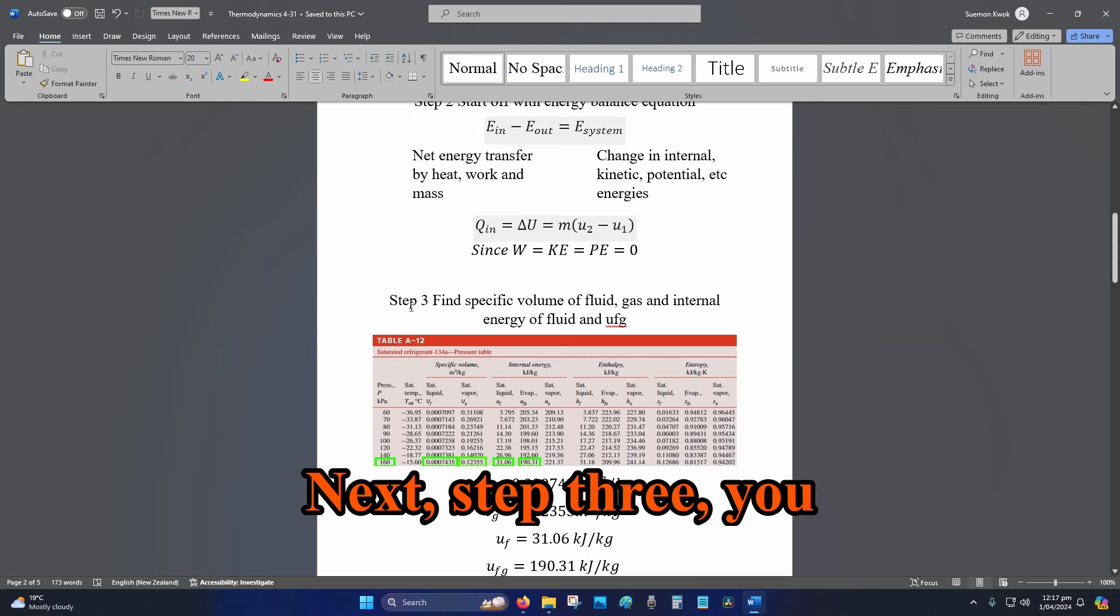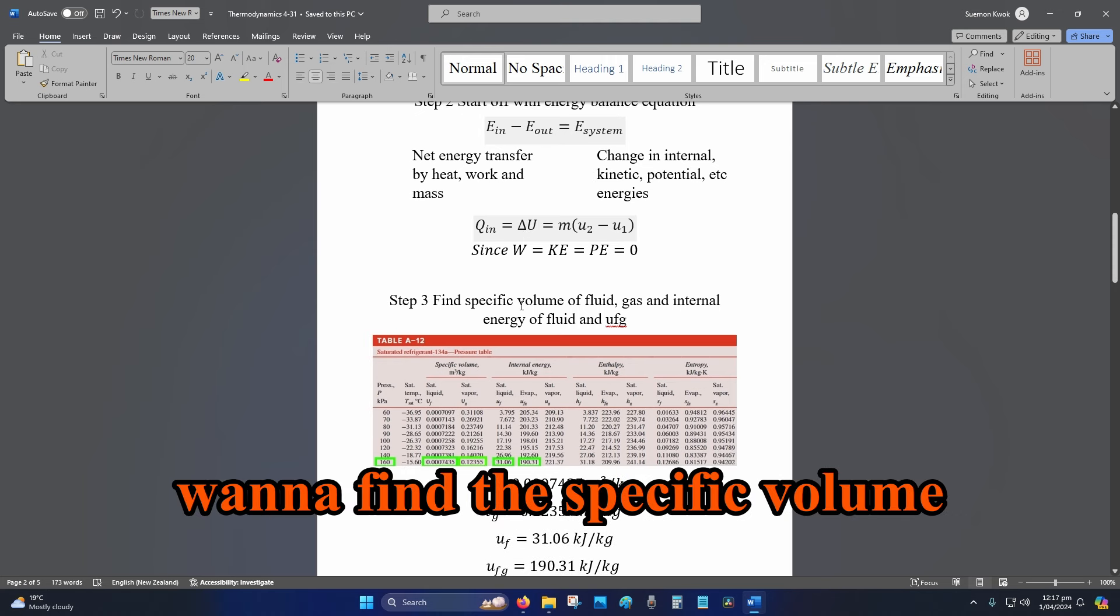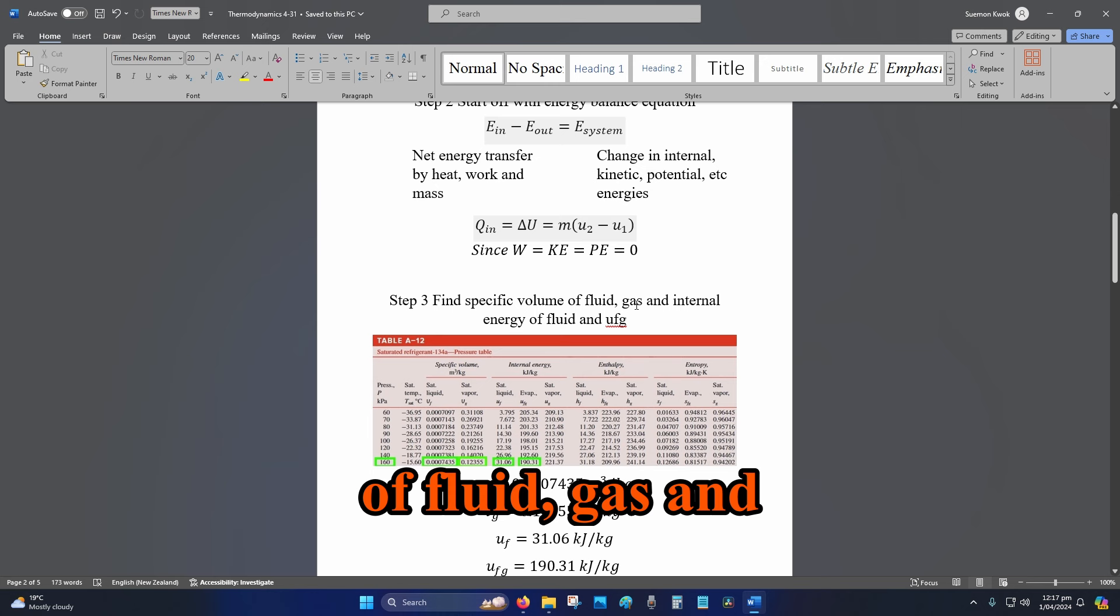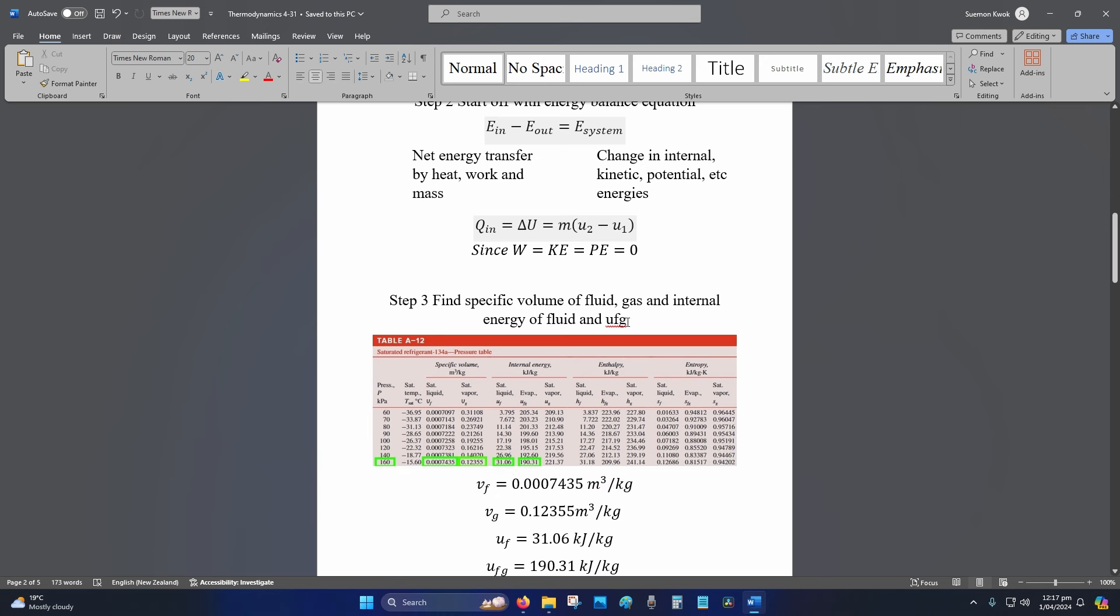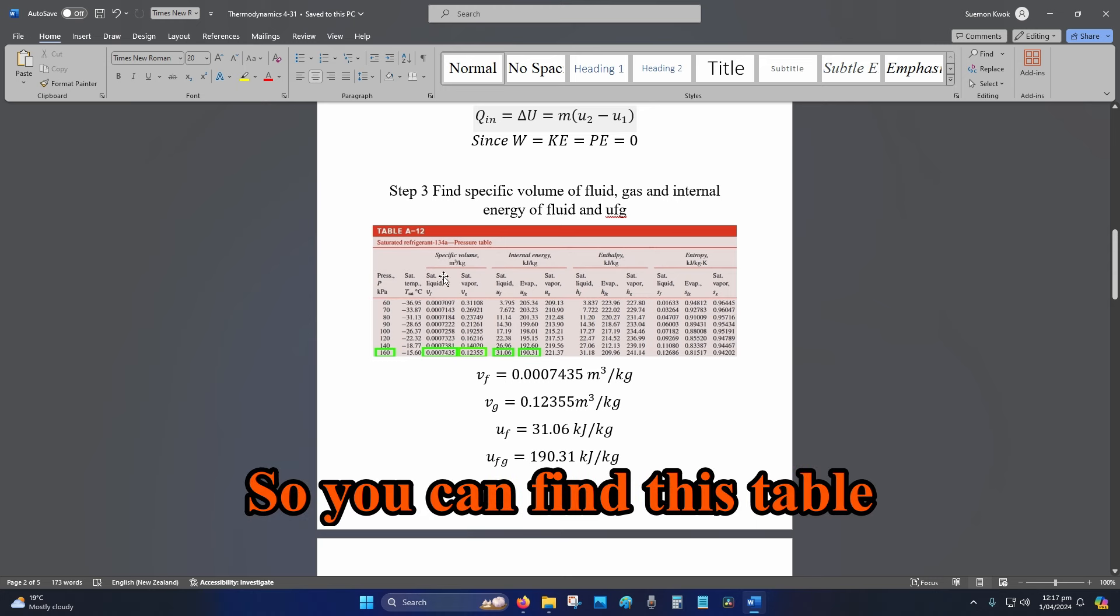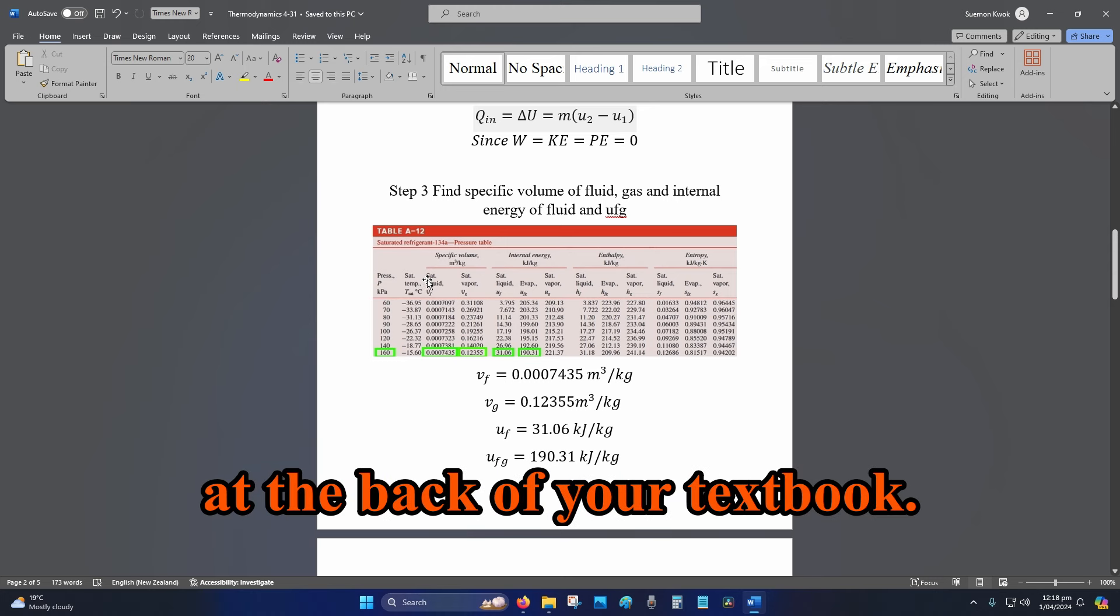Next, Step 3: You want to find the specific volume of fluid and gas, and internal energy of fluid and u_fg, which is the vaporization energy. You can find this table at the back of your textbook.